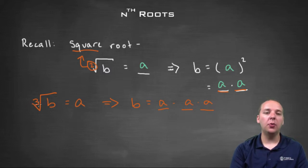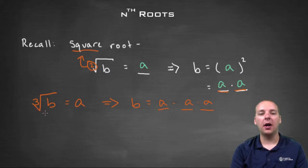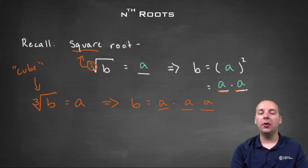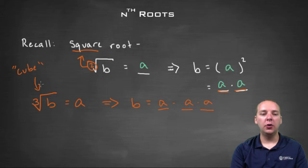The third root is actually very common and has a special name — it's called a cube root. So you have square roots corresponding to a two in the radical, and cube root corresponding to a three in the radical.